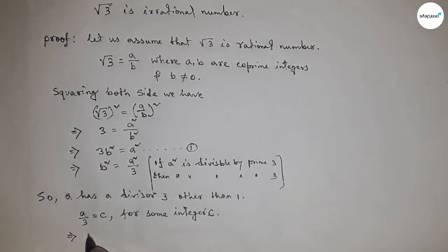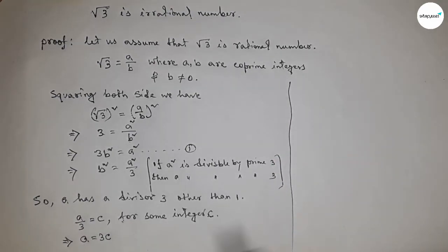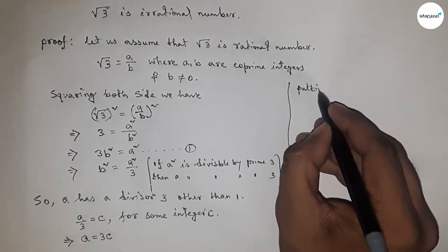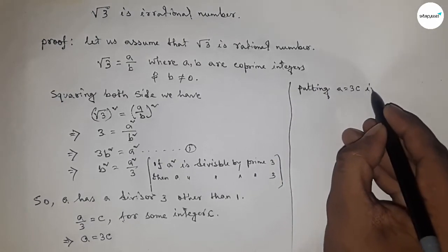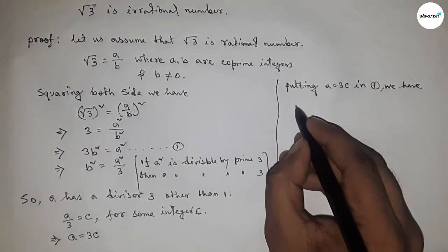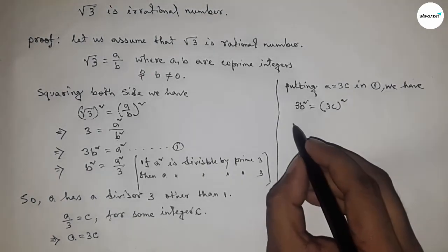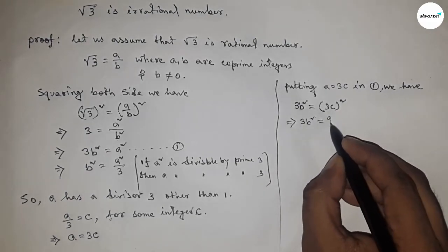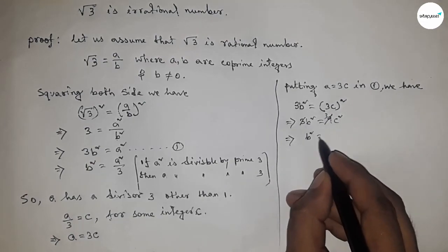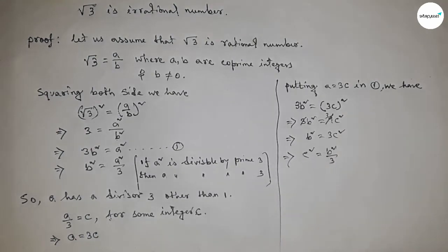Now putting a equal to 3c into equation 1: we have 3b squared equal to 3c whole square, which gives 3b squared equal to 9c squared. Cancelling the common factor 3, we get b squared equal to 3c squared. We can also write c squared equal to b squared by 3.